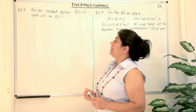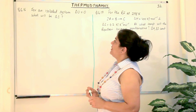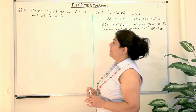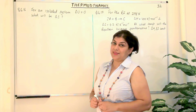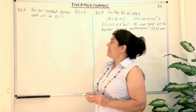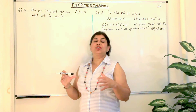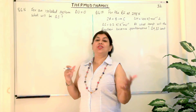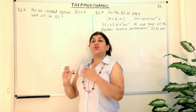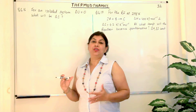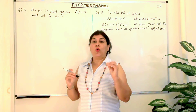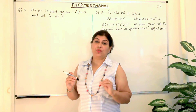The question reads: for an isolated system, delta U is 0 — what will be delta S? What is an isolated system? An isolated system is one in which there is no exchange of energy and there is no exchange of matter. When there is no exchange of energy, it means Q is equal to 0, or delta H is equal to 0.